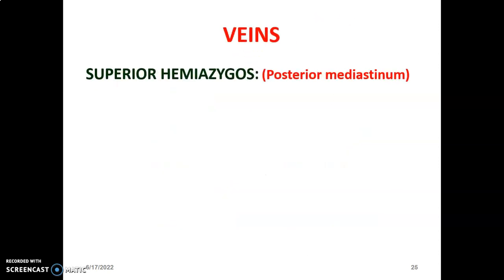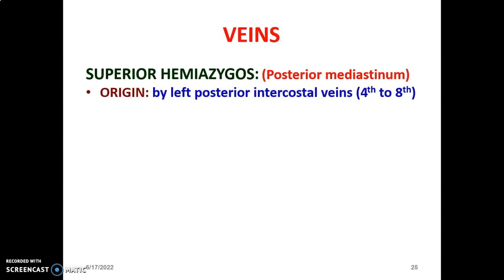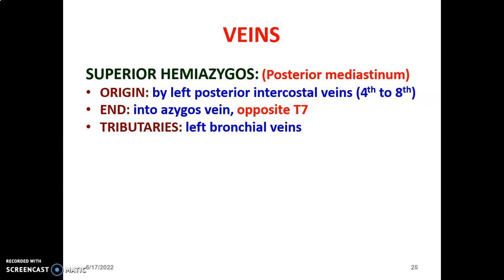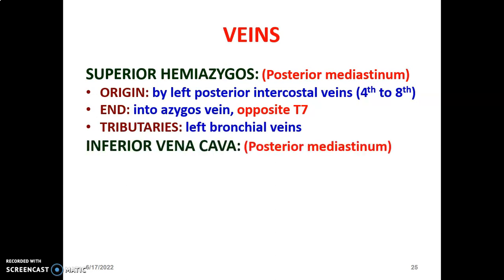The superior hemiazygos is also in the posterior mediastinum. It originates from the left posterior intercostal veins in the fourth to eighth intercostal spaces and terminates in the azygos vein opposite T7. The inferior hemiazygos terminated opposite T8 vertebra. The main tributary of the superior hemiazygos is the left bronchial veins.